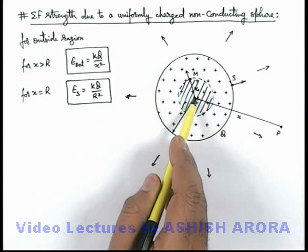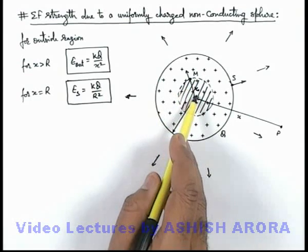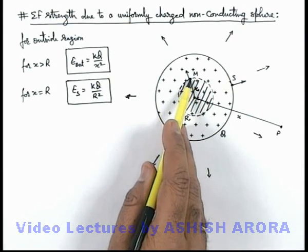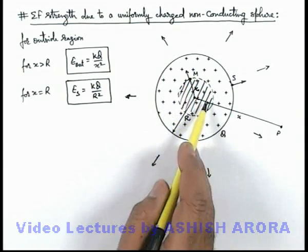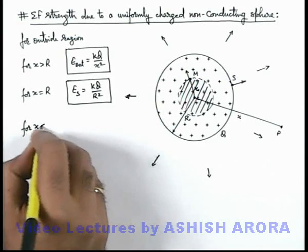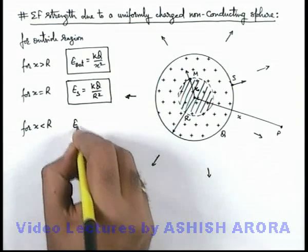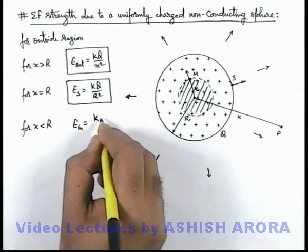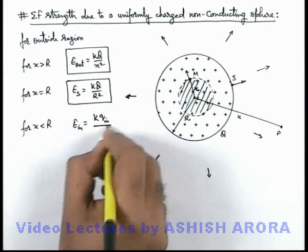But this point is located on the surface of the sphere of radius x. So at M, the electric field will exist due to this enclosed charge. We can write for x less than R, the electric field inside as E_in = k·q_inside/x².